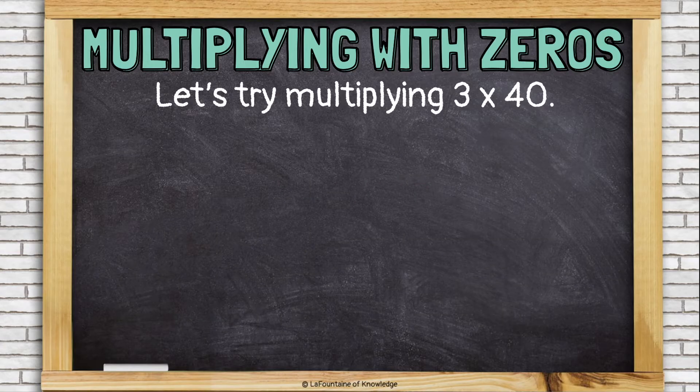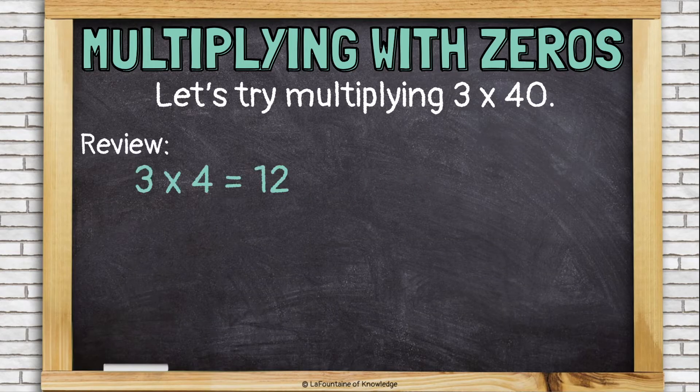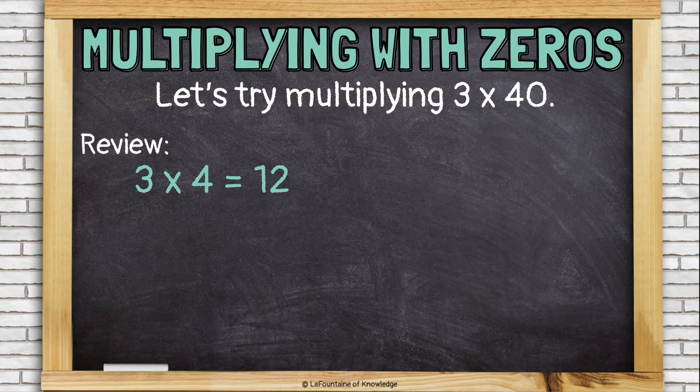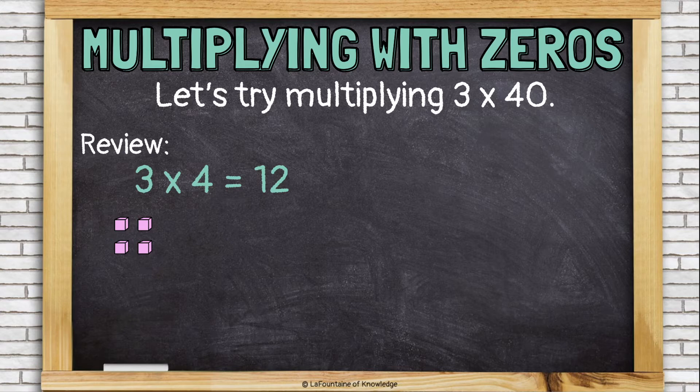Let's try multiplying 3 times 40. So first let's look at 3 times 4, which we know is 12. Let's look at what that would look like using base 10 blocks. We have 3 groups of 4.